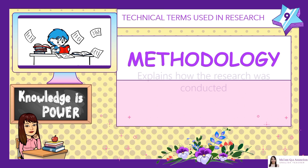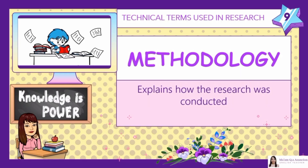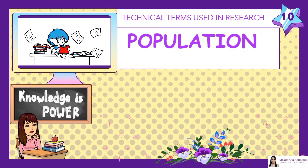Number 9: Methodology. Explains how the research was conducted. More specifically, it's about how a researcher systematically designs a study to ensure valid and reliable results that address the research aims and objectives — for example, how did the researcher decide what data to collect, who to collect it from, how to collect it, and how to analyze it.